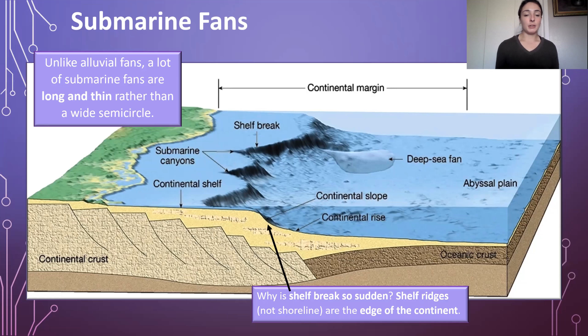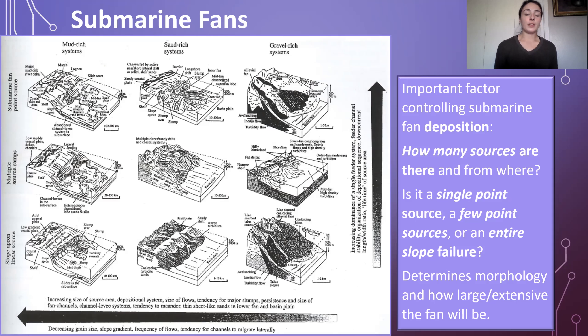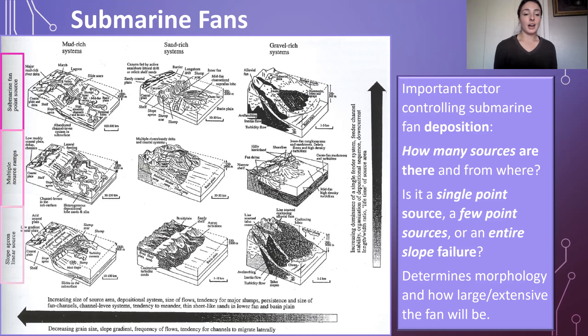Other factors control the morphology and geometry of a submarine fan system. An important one is the number of sources. A point source — one channel feeding the fan — produces deposition from a specific point that fans out, whereas an entire slope failure produces a slump feature. The morphology is greatly affected by whether it's a single point source, multiple point source, or an entire slope failure. The columns in this figure represent whether the system is mud-rich, sand-rich, or gravel-rich.